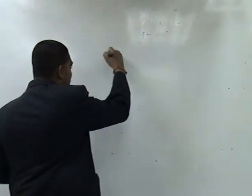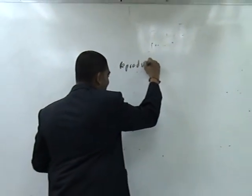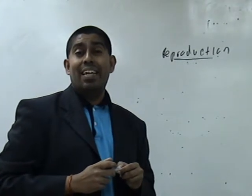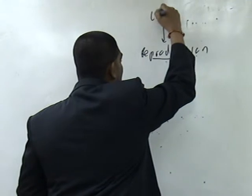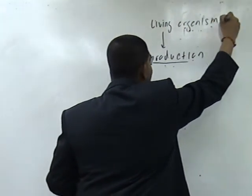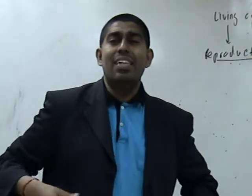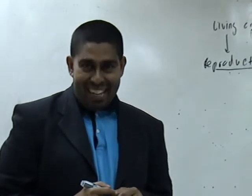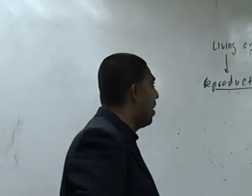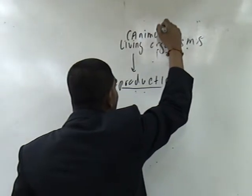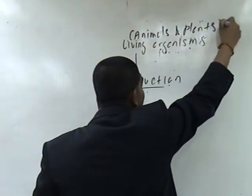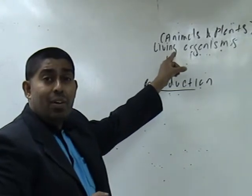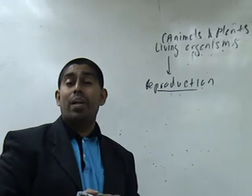This chapter of reproduction is a very wonderful and beautiful chapter. The first thing you want to understand is that reproduction is carried out by living organisms — this is a very important point. When I mention living organisms, this includes both animals and plants. So reproduction is carried out by living organisms, which includes both animals and plants.